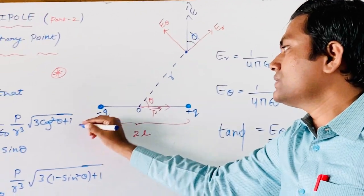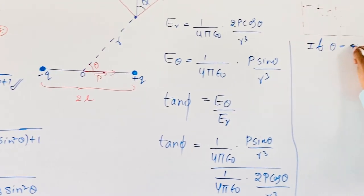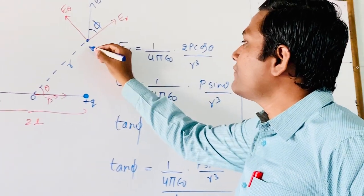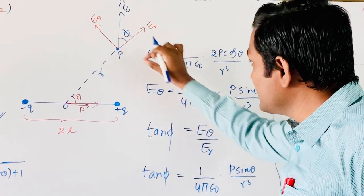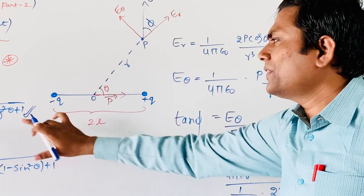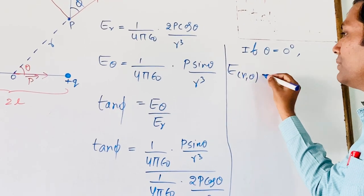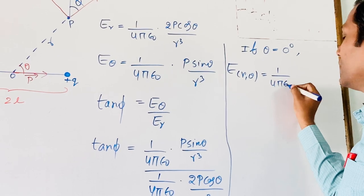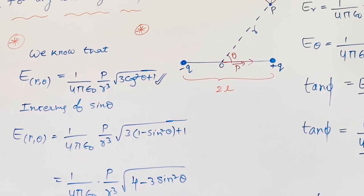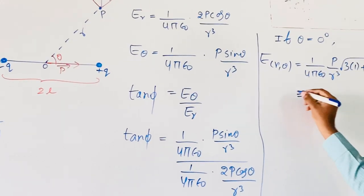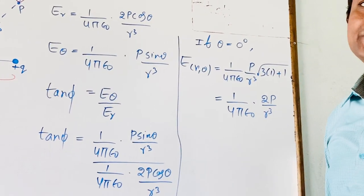In this expression, suppose I am taking theta is equal to 0 degrees. This point P will fall on the axial line. At that time, the result of this expression becomes: E of R theta equals 1 by 4 pi epsilon naught into P by R cube, multiplied by the square root of 3 cos squared 0 plus 1, which equals 1 by 4 pi epsilon naught into 2P by R cube. This result is already well known.